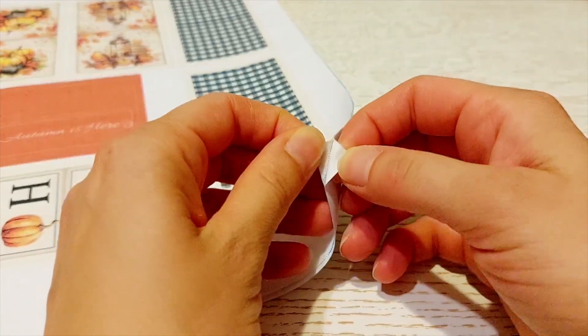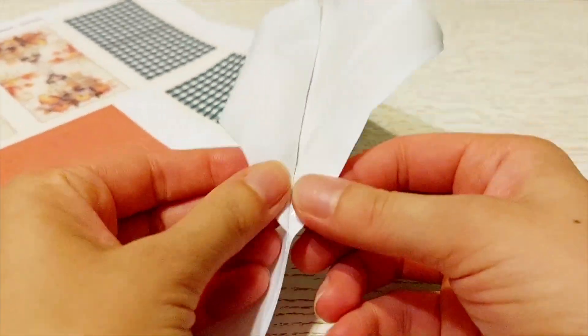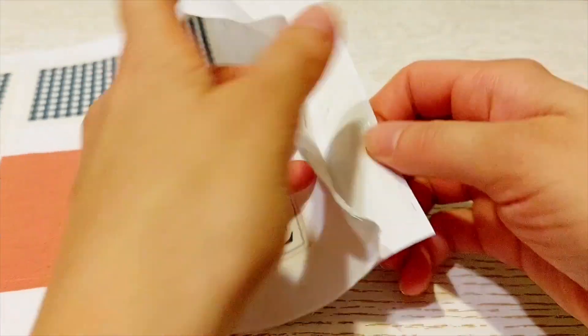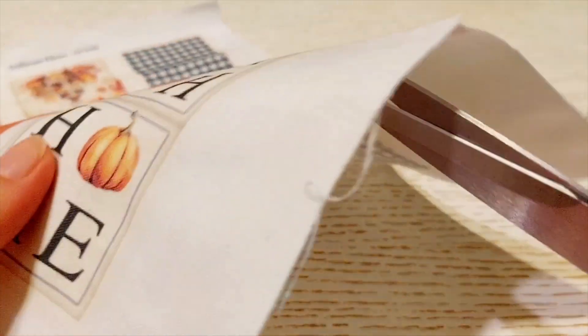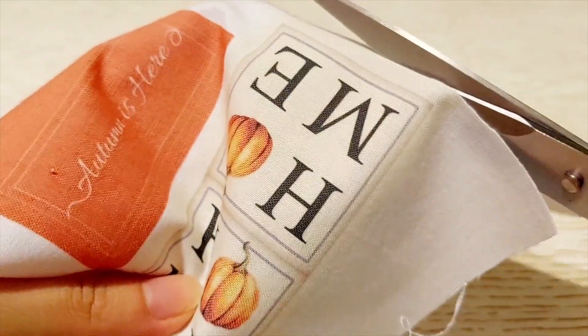Before cutting out the pillows carefully remove the entire paper sheet. Peel it off gently so you don't stretch the fabric. Then cut out each individual pillow following the outer edge of the seam allowance.